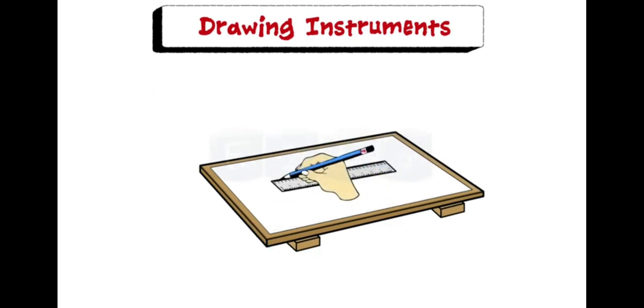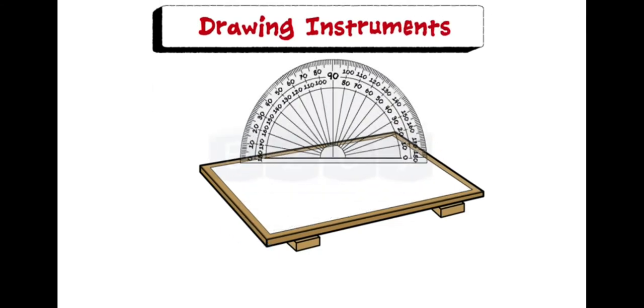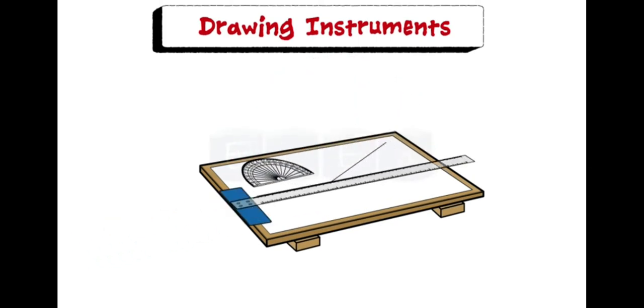A scale is used to draw lines of specific length. Protractor is flat and semi-circular in shape. Its circumferential edge is graduated to one-degree divisions and is numbered at every 10-degree interval, readable from both ends. The protractor is used to draw or measure angles.